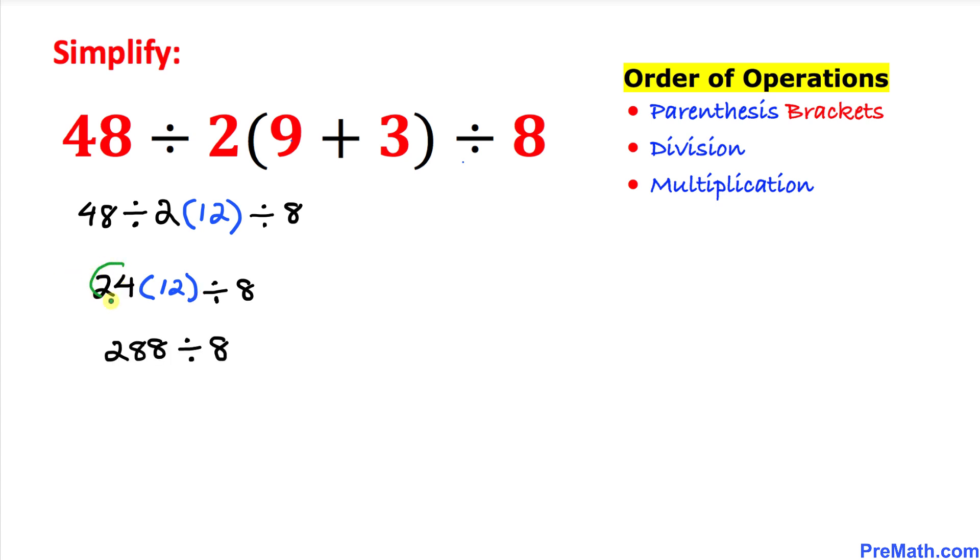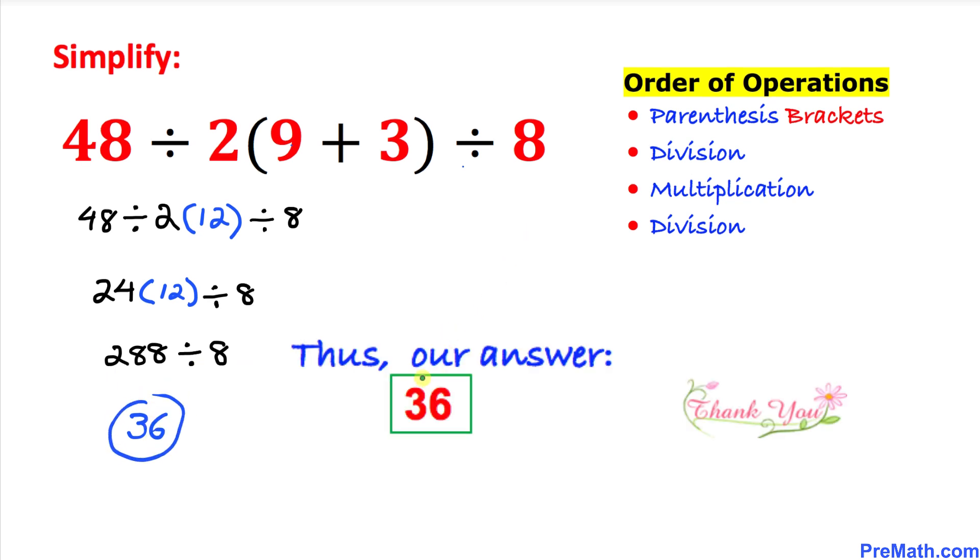So this 24 times 12 gives us 288 and finally 288 divided by 8 is going to give us 36. Thus our answer turns out to be 36.